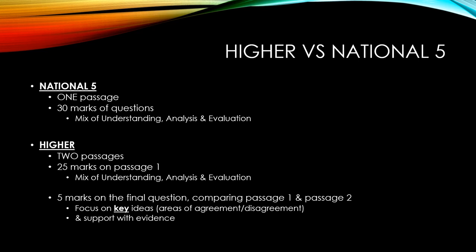Let's consider the main differences between Higher RUAE and National 5 RUAE. At National 5 there is a single passage with 30 marks of questions — a mixture of understanding, analysis and evaluation, with the vast majority being understanding and analysis. At Higher there are two passages: 25 marks on passage one with a similar mixture of question types, and then a final five marks from a comparison question where you compare passages one and two, focusing on key ideas and areas of agreement or disagreement, supporting those with evidence.